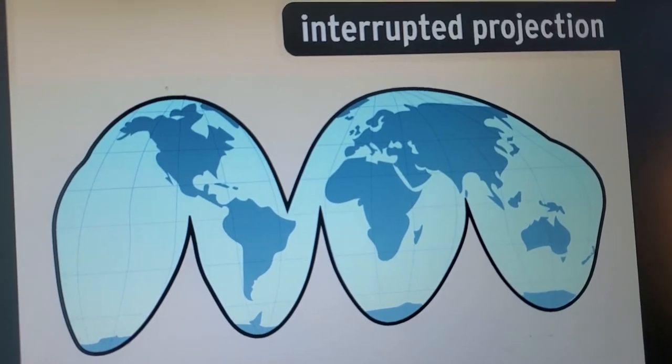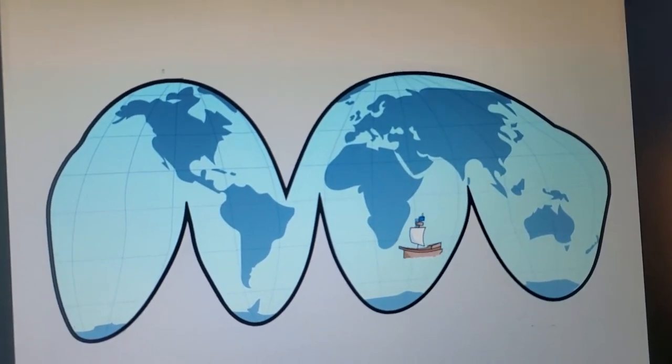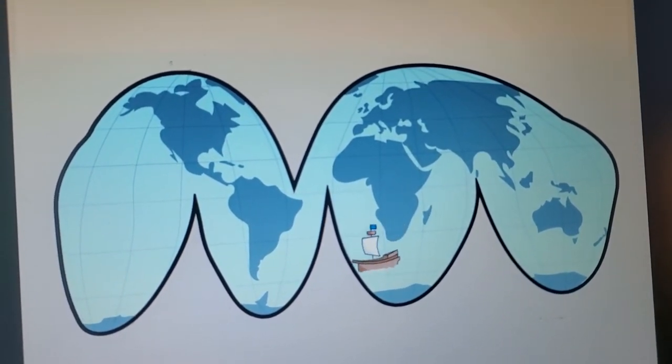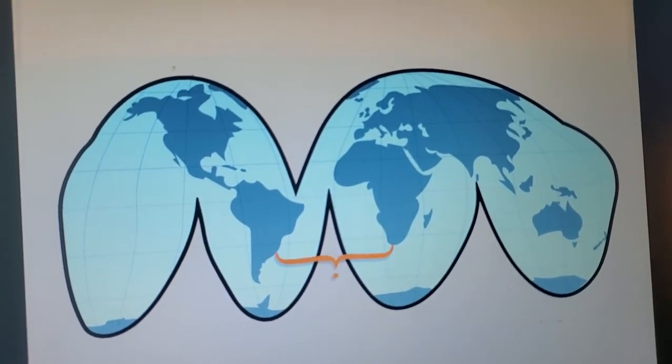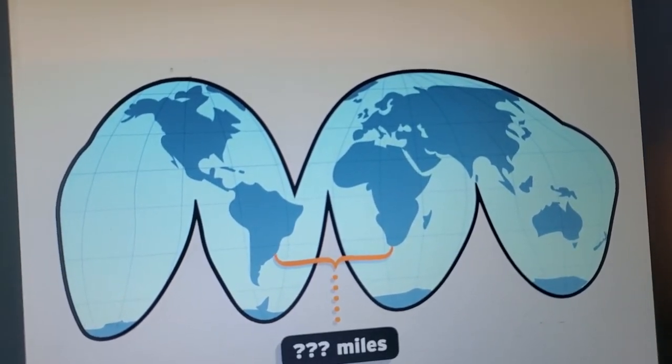Interrupted projections keep size and shape pretty accurate, except where the map gets cut off, like in the oceans here. Plus, it's tough to measure distance and direction between different sections.